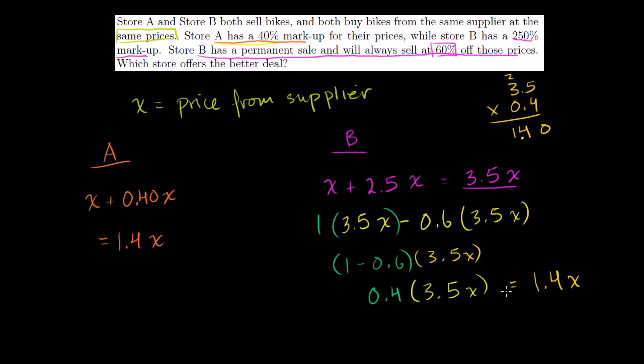So in either store, you're actually going to pay the same price. Let's say they buy the bikes from the supplier at $100. Then in store A, you're going to pay $140 for that bike. And in store B, you're going to spend $140 for that bike. But in store B, you think you're getting 60% off.